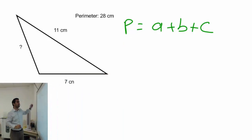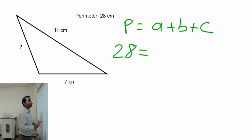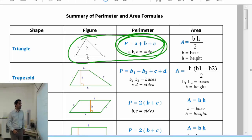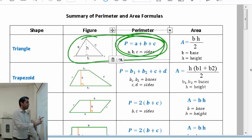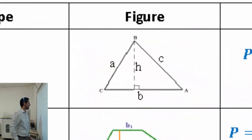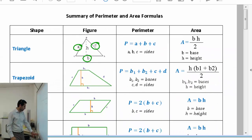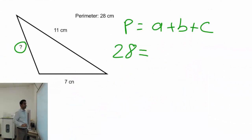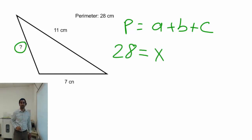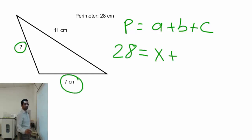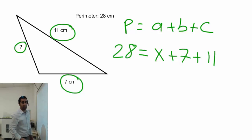Now I substitute the given information. 28 equals a — I have no idea what a is. Looking at the formula handout, a, b, and c are the three sides of the triangle. Going back to the question, the unknown side is labeled x, and the known sides are b equals 7 and c equals 11.